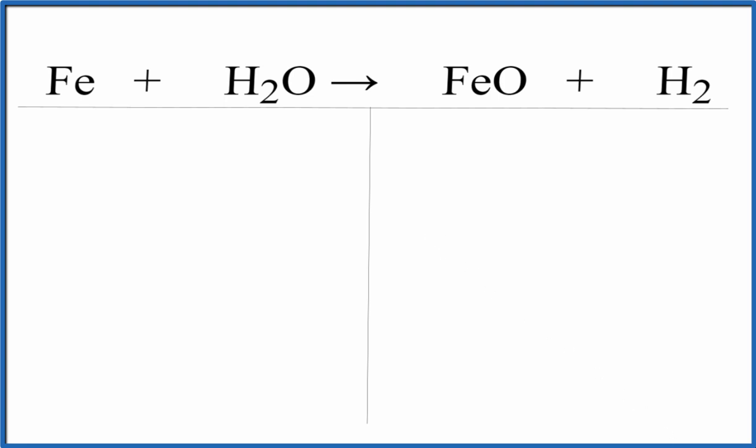Let's count the atoms up on each side of the equation. We can only change the coefficients, the numbers in front of these molecules. We cannot change these subscripts here. So let's count the atoms up.